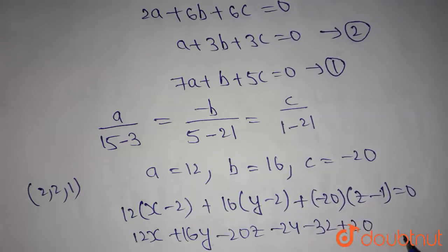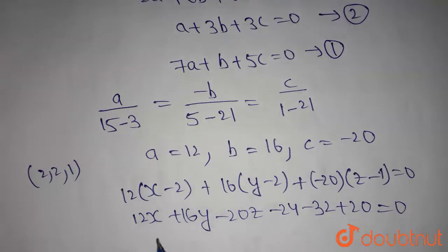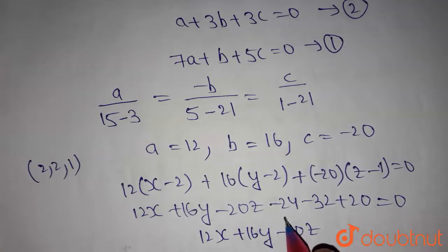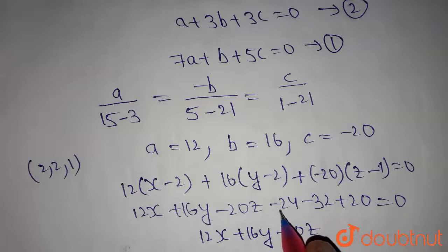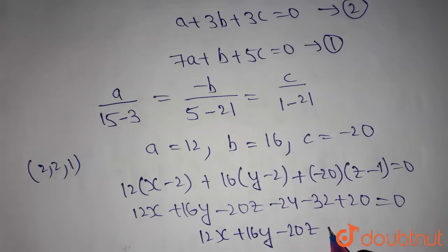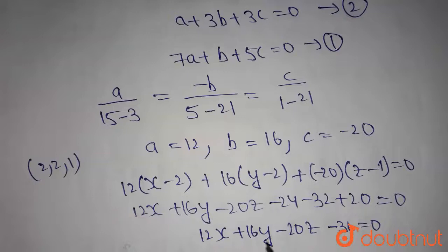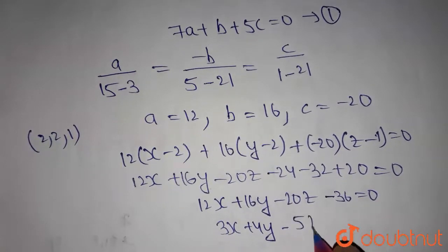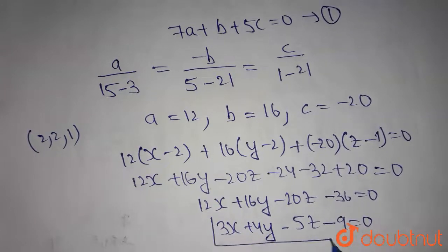Simplifying: 12x + 16y − 20z − 24 − 32 + 20 = 0, which gives 12x + 16y − 20z − 36 = 0. Dividing through by 4, we get 3x + 4y − 5z − 9 = 0. This is the required plane equation.